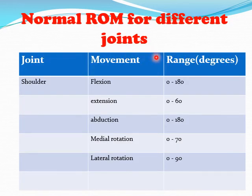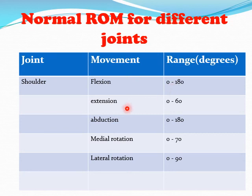Normal range of motion for different joints is as follows. For the shoulder joint, movements are flexion, extension, abduction, medial rotation, and lateral rotation. Flexion: 0 to 180 degrees. Extension: 0 to 60 degrees. Abduction: 0 to 180 degrees. Medial rotation: 0 to 70 degrees. Lateral rotation: 0 to 90 degrees.